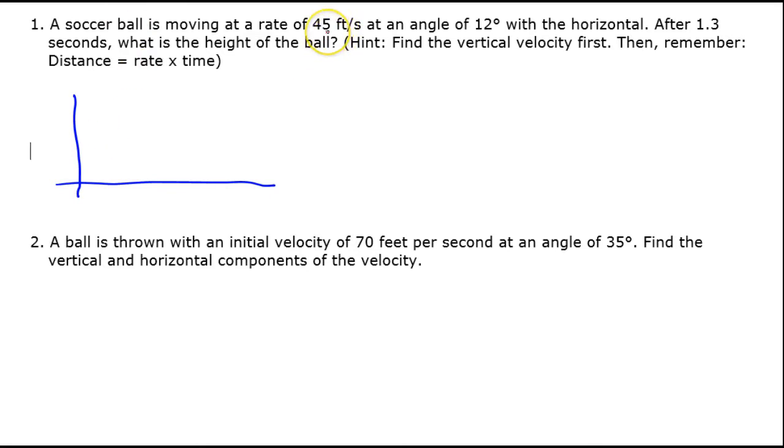So here's the y-axis and the x-axis. We'll draw a vector to represent the velocity of the soccer ball. So the soccer ball velocity has a magnitude of 45 feet per second. This is not a distance, this is a speed at an angle of 12 degrees. That's the direction.